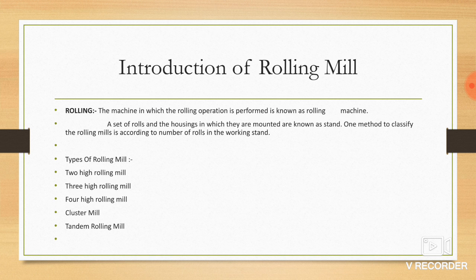Introduction of rolling mill. The machine in which the rolling operation is performed is known as a rolling machine. A set of rolls and the housing in which they are mounted is known as a stand. One method to classify the rolling mill is according to the number of rolls in the working stand.